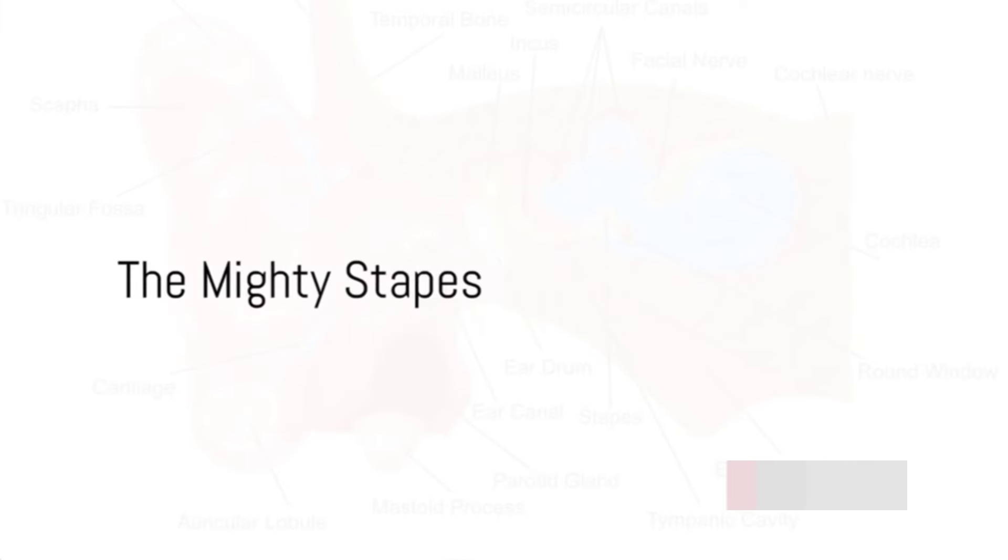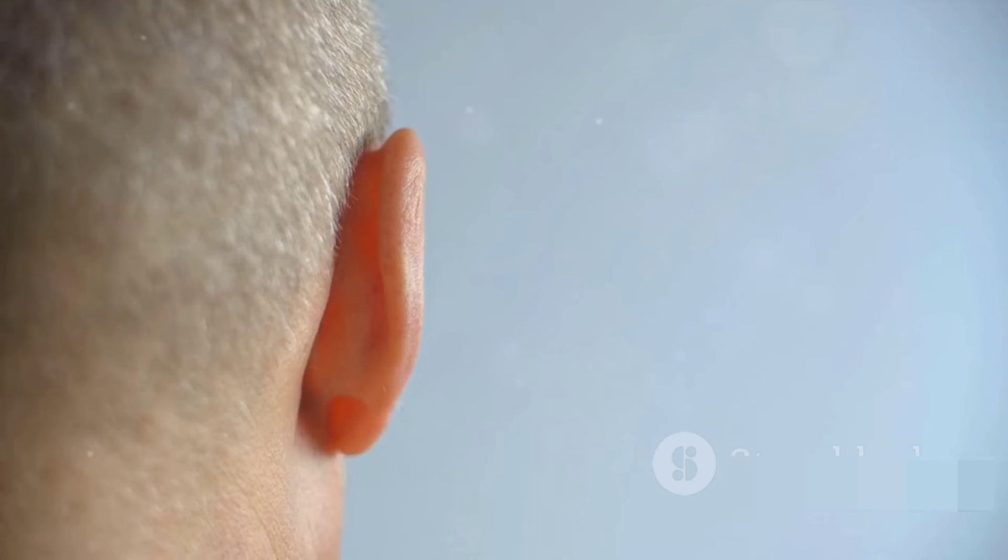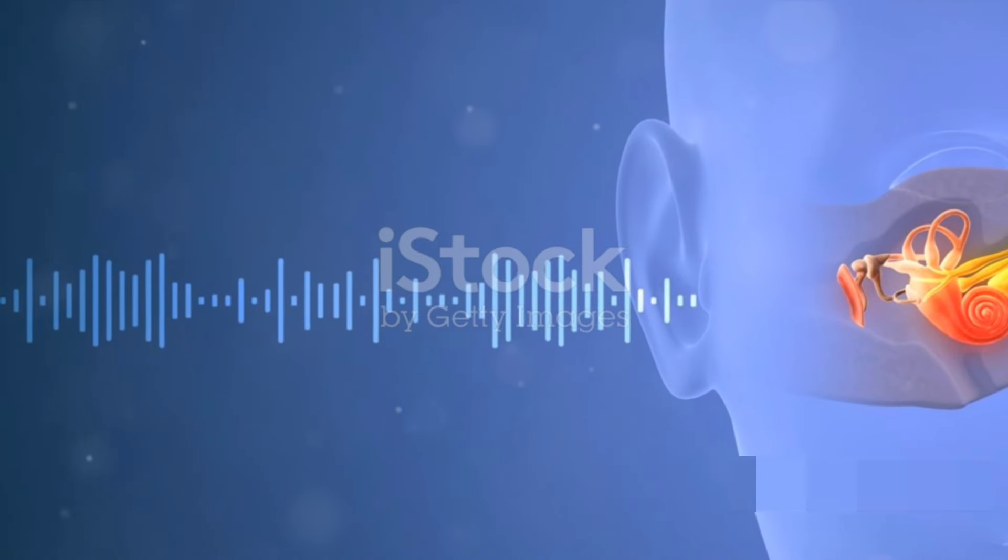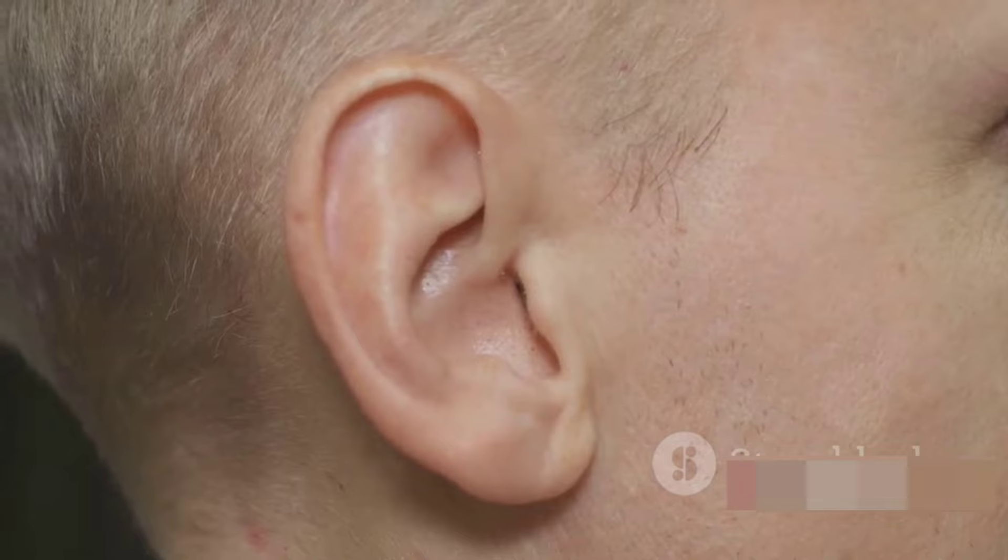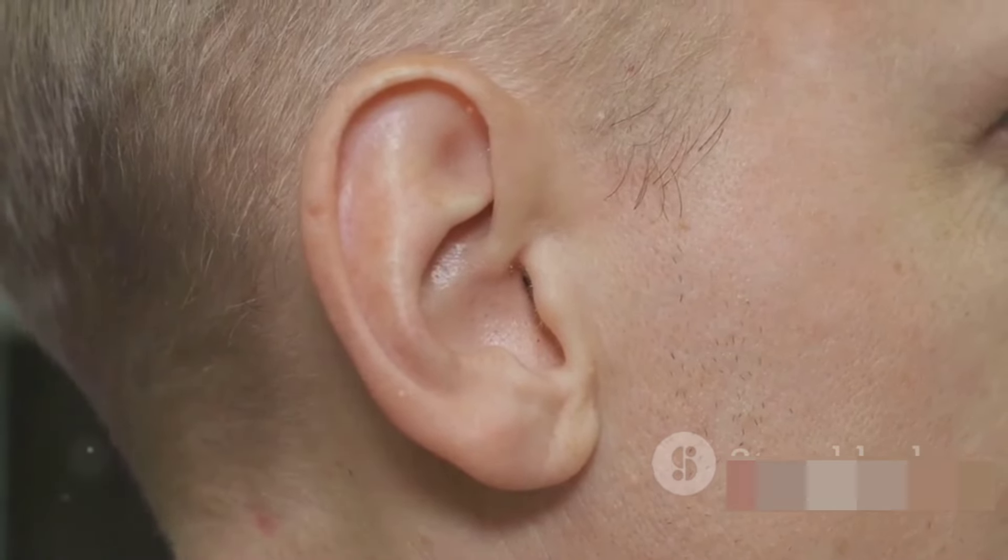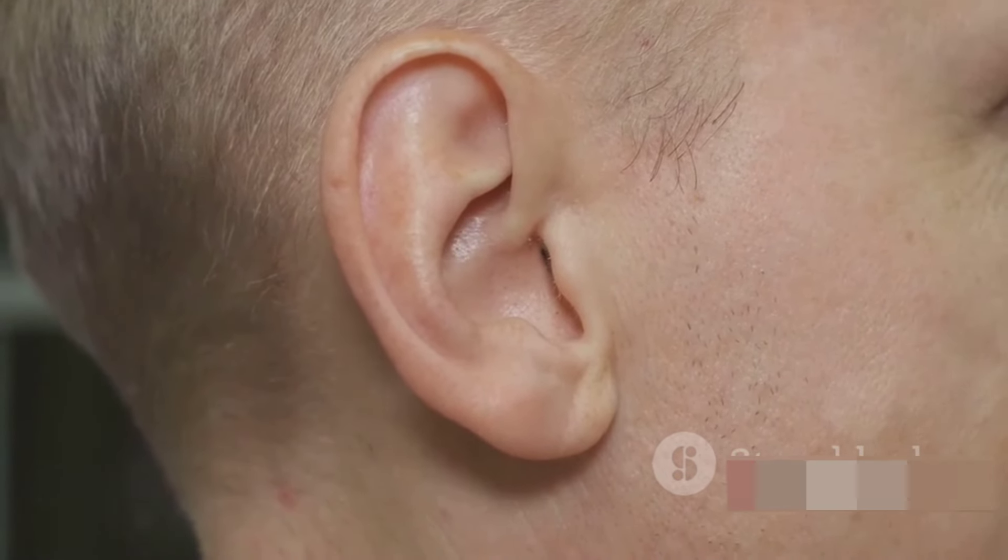And while we're on the topic of small but mighty, let's talk about the stapes, the smallest and lightest bone in the human skeleton. Located in the middle ear, this little bone plays a crucial role in transmitting sound vibrations from the air to the fluid-filled labyrinth of the inner ear.